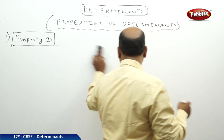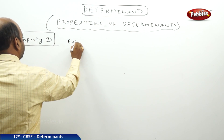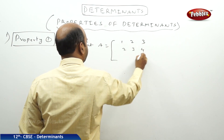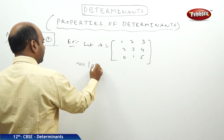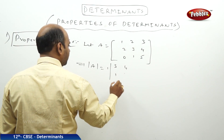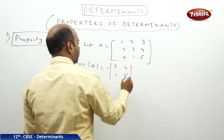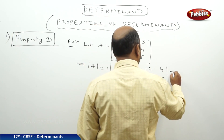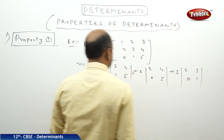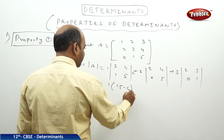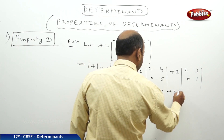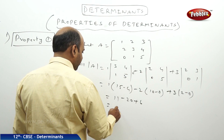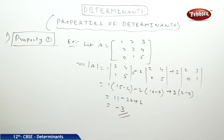I will go by an example to show that det(A) = det(A transpose). Let A = [[1,2,3],[2,3,4],[0,1,5]]. Finding the determinant: 1×(3×5 - 4×1) - 2×(2×5 - 4×0) + 3×(2×1 - 3×0) = 1×(15-4) - 2×(10-0) + 3×(2-0) = 11 - 20 + 6 = -3. So det(A) = -3.